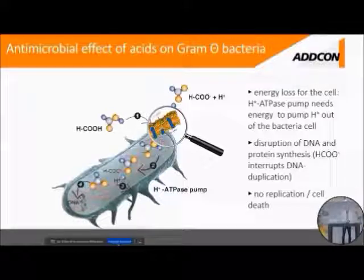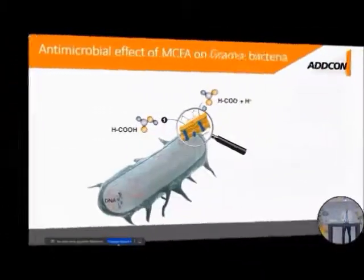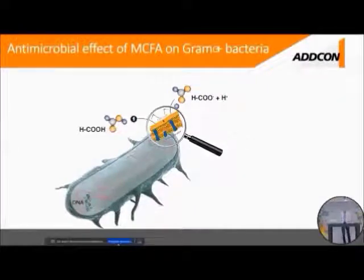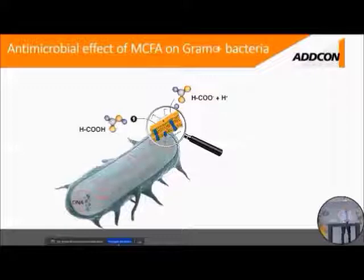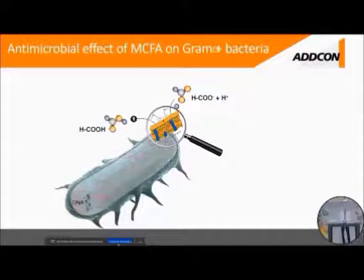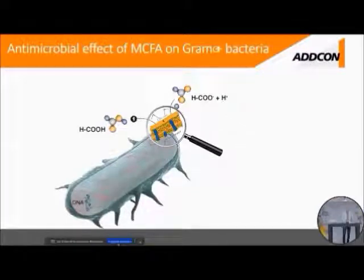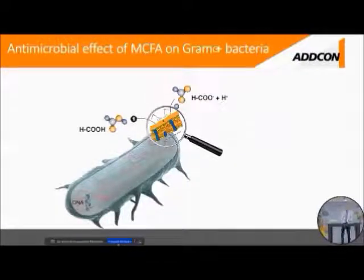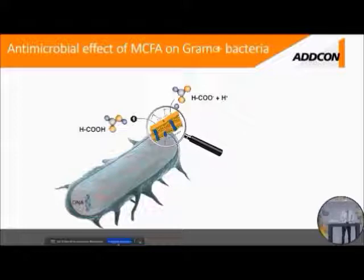This holds true for gram-negative bacteria only. What about gram-positive bacteria? Gram-positive bacteria, as you can see inside the magnification glass, have on top of their cell membrane an additional cell wall. This cell wall consists of peptidoglycans, which do not contain any phospholipids, and therefore the unassociated form of the organic acid is not able to attach to it and cannot penetrate it. So does that mean we are left at a loss with gram-positive bacteria, or are there ways to create an antimicrobial impact?